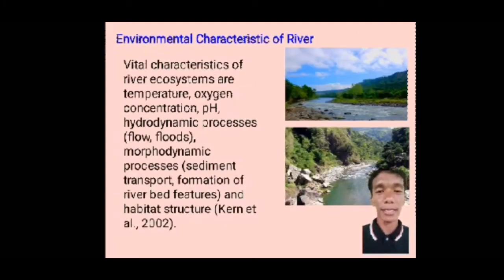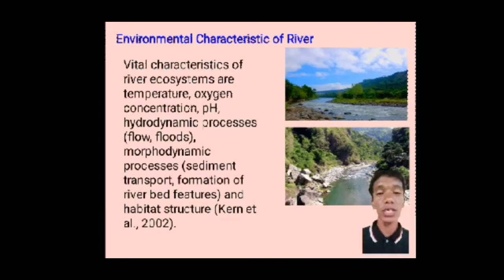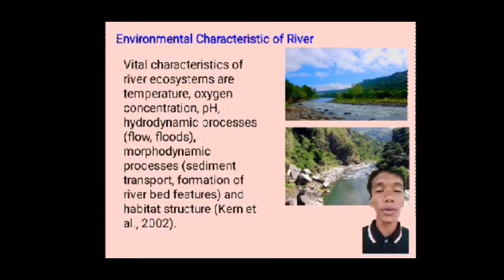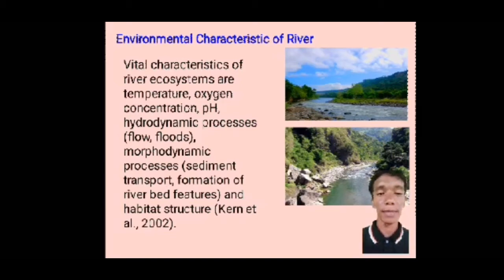Environmental characteristics of rivers: vital characteristics of a river ecosystem are temperature, oxygen concentration, pH, hydrodynamic processes, flow or floods, morphodynamic processes, sediment transport, formation of riverbed features, and habitat structure, by Curtin et al., 2002.